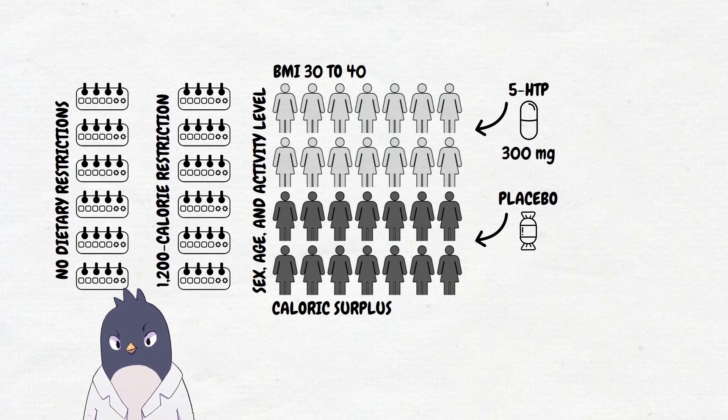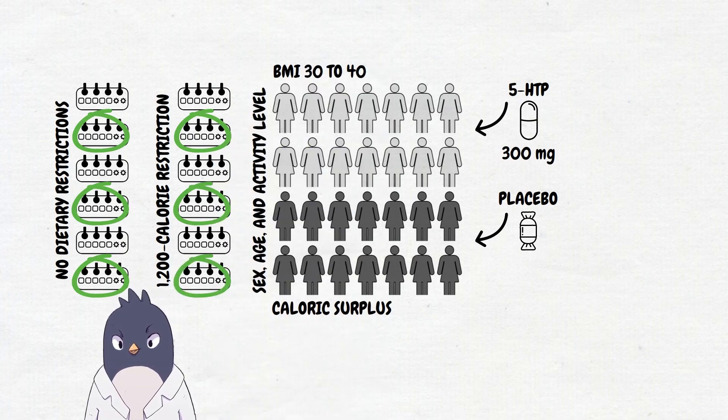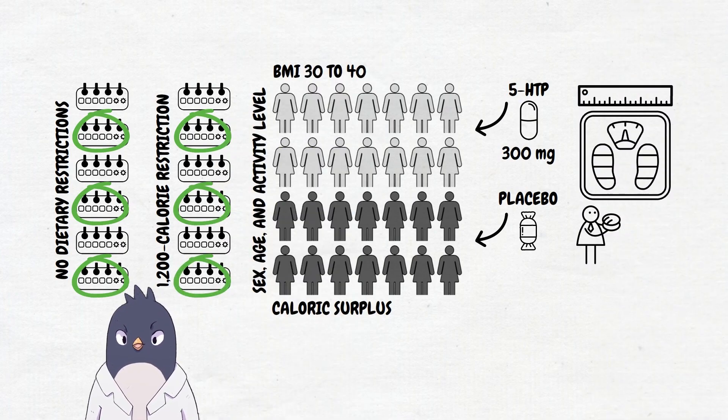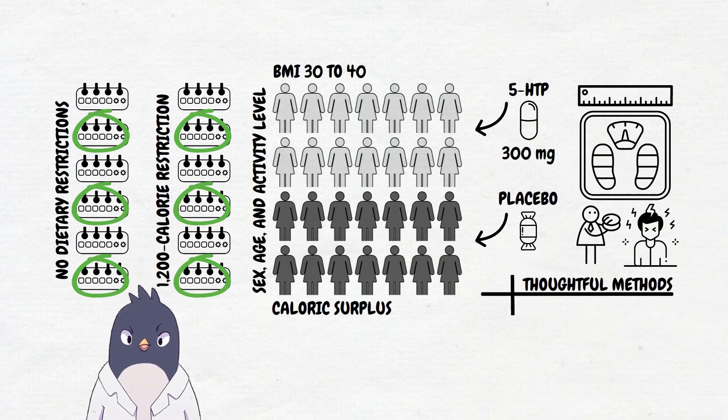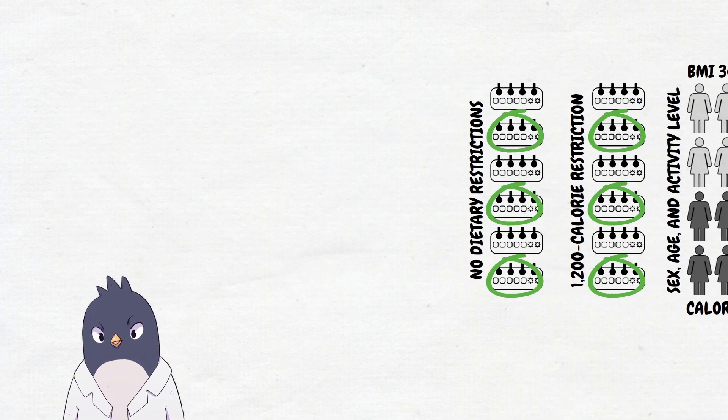Subjects weighed their food and kept food diaries so the researchers could estimate caloric intake. Every two weeks they collected this data, measured subjects' weight, investigated changes in eating behavior, and checked for side effects. The methods in this study seemed pretty thoughtful. It would have been nice if it was a bit bigger, you'll see why as we talk about the results.